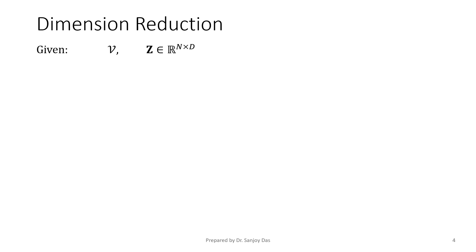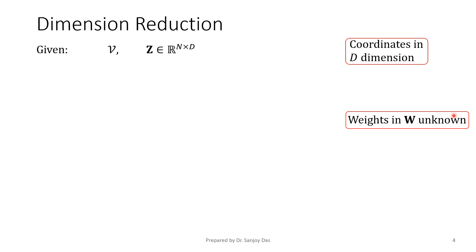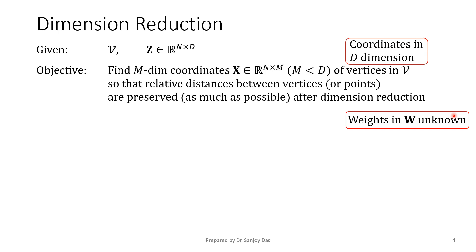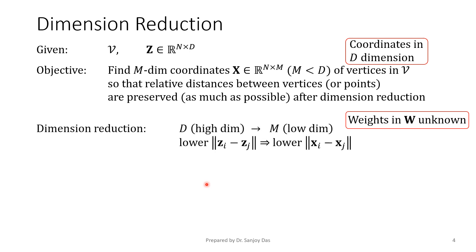We are given a set of vertices v and z, which is a coordinate matrix in higher dimensions d, and we are not given any weights. The objective is to find an m-dimensional coordinate matrix x of vertices in v so that relative distances between vertices, which I shall be calling as points, are preserved after dimension reduction.